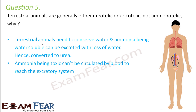Also, ammonia being very toxic cannot safely be circulated through the blood to reach the excretory system. In humans, waste materials travel via the blood through the afferent arteriole to the kidney. If ammonia were that toxic it would be very risky to circulate it through the blood. These are the reasons why terrestrial animals are generally ureotelic or uricotelic but not ammonotelic.